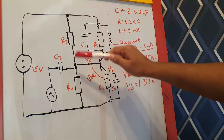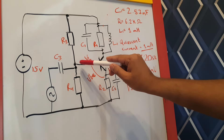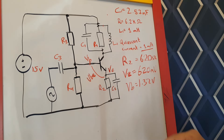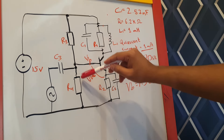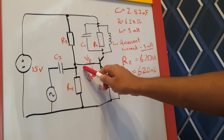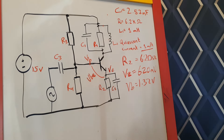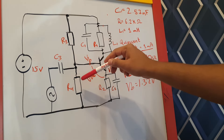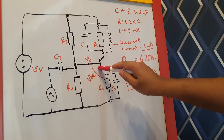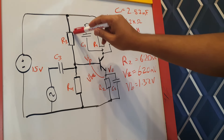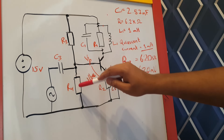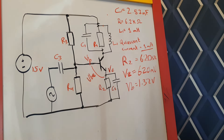Next, we tune R3 and R4 to create 1.32 volts at the base — a simple potential divider calculation. An important consideration is ensuring enough current flows through the divider so it isn't significantly affected by the base current. With 1 milliamp quiescent current, the base current is approximately 100 times less, around 10 microamps, so we want at least 1 milliamp flowing through R3 and R4 with the 15 volt supply.